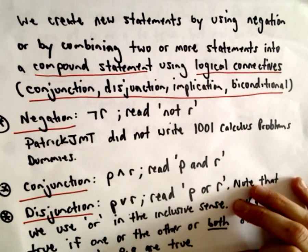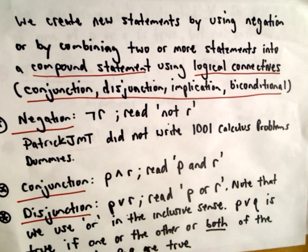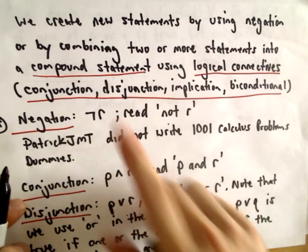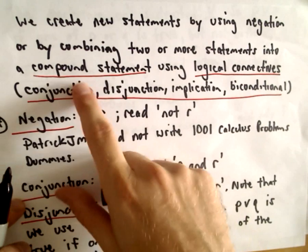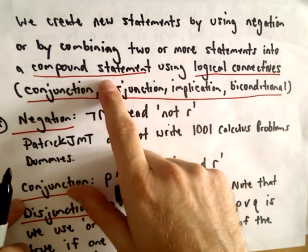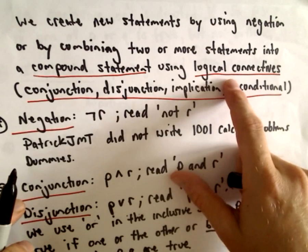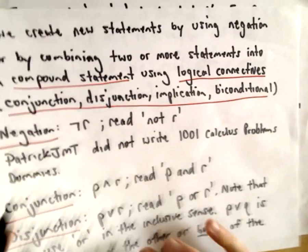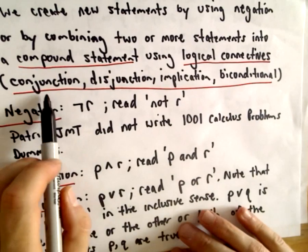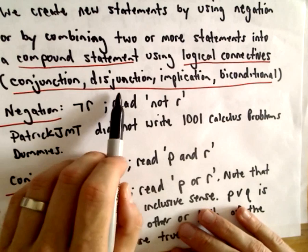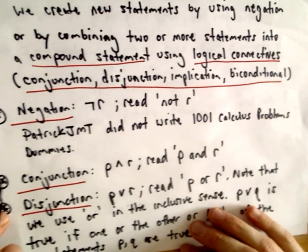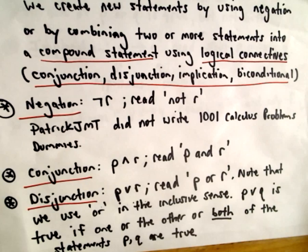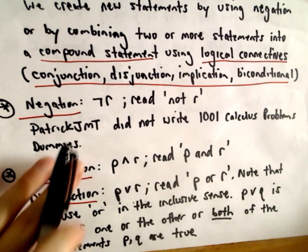We can create new statements by using a couple of different things. We can use negation, or we can combine two or more statements into what are known as compound statements by using logical connectives. The connectives we'll use are called conjunction, disjunction, implication, and the biconditional. So let's go ahead and start talking about truth tables as we go through this.